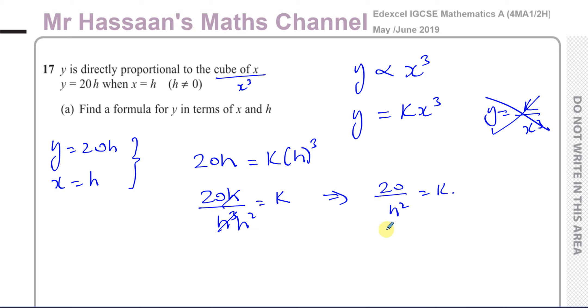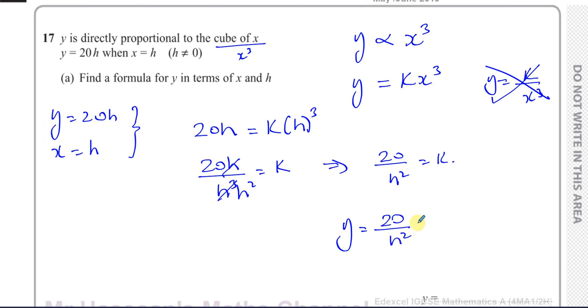We now know the value of k, and now we can write down the formula that connects y and x. We can replace the k here with 20 over h squared times x cubed. So you have y equals 20x cubed over h squared. That is the formula which connects y to x in terms of x and h.